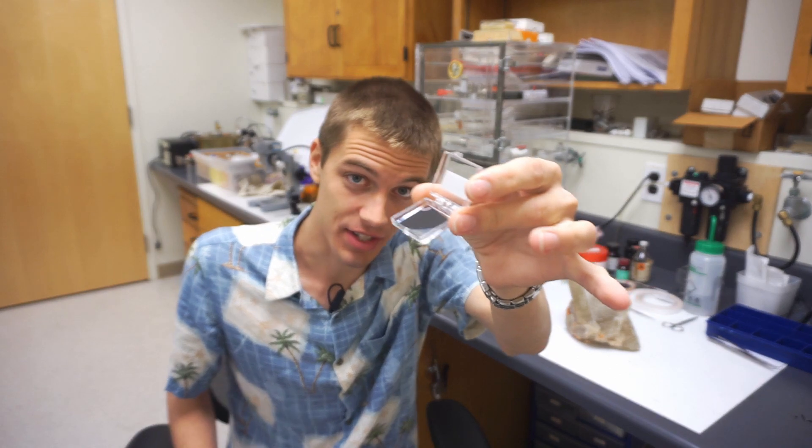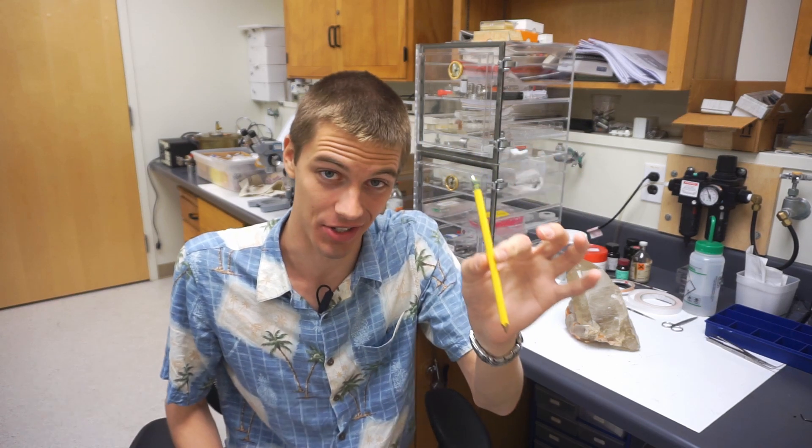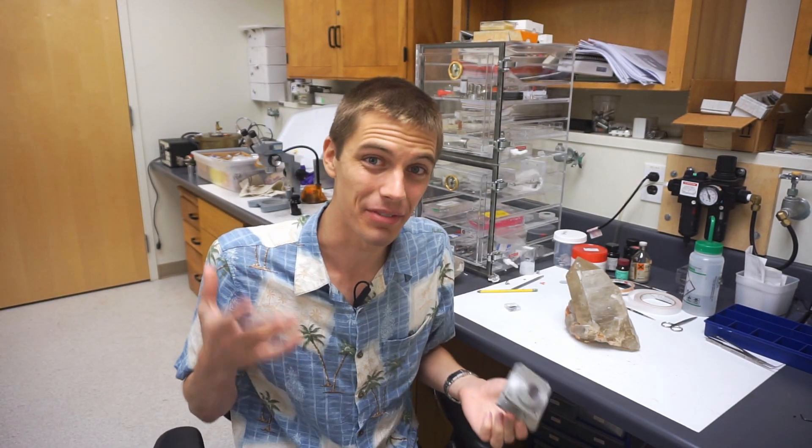This wafer of silicon, the same material that is used to make processors in phones and computers, is also a crystal. Every flake of graphite in this pencil is a crystal. And even this random part that I found made of aluminum is crystalline. So what does crystalline really even mean?